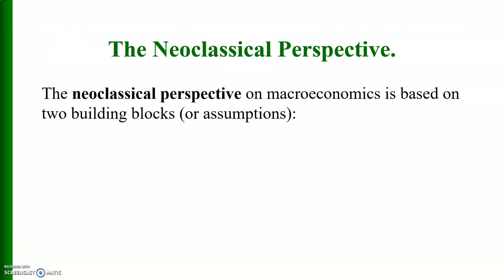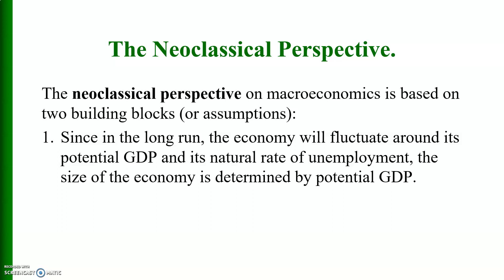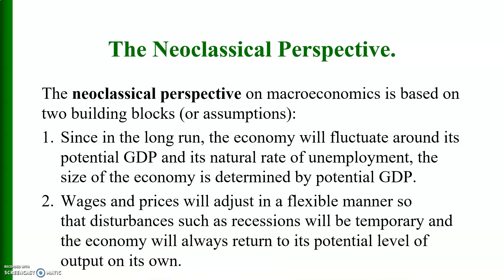The new classical perspective on macroeconomics is based on two building blocks. First, in the long run the economy will fluctuate around its full employment GDP level and natural rate of employment, so the size of the economy is determined by potential GDP. Second, wages and prices are flexible, so they adjust in a flexible manner, meaning disturbances such as recessions will be temporary and the economy will always return to its potential level of output on its own, without government intervention. They believe market forces can bring equilibrium in the long run.